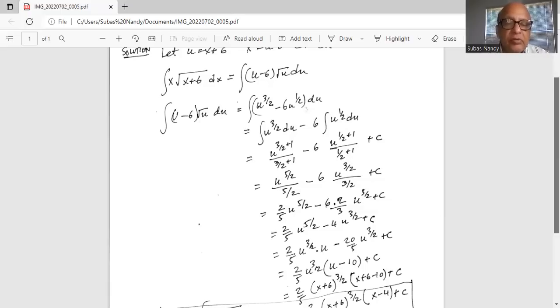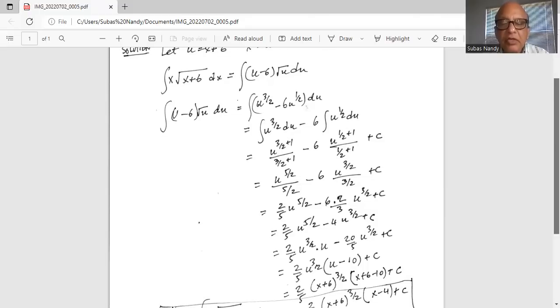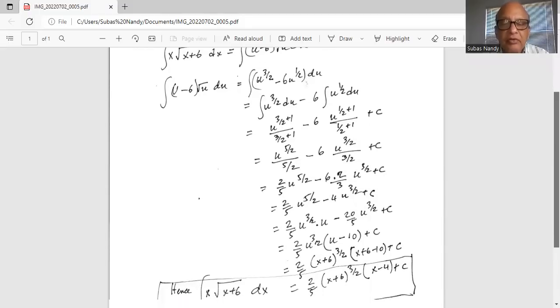So if I take 2 by 5, 2 divided by 5 u 3 by 2 as a common factor outside the parenthesis, we are left inside the parenthesis with u minus 10 plus 6.